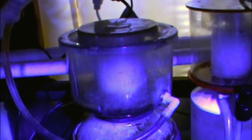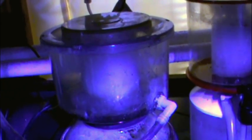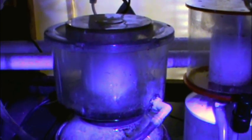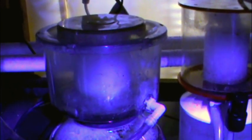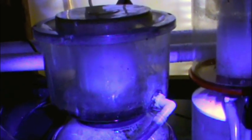Now the key with any protein skimmer is the bubbles. You want to get as many bubbles as possible. What happens is the proteins suspended in your water column attach to the bubbles. They're brought to the surface of the skimmer and skimmed off the top.